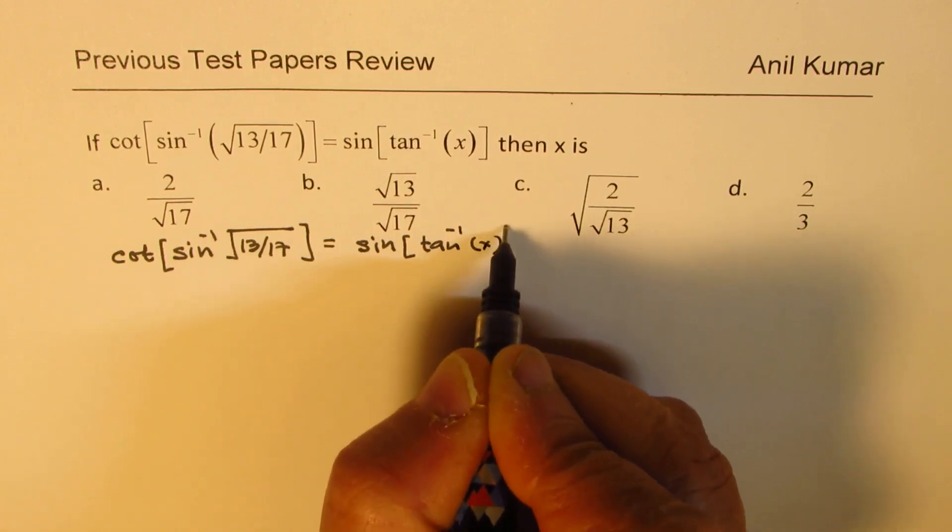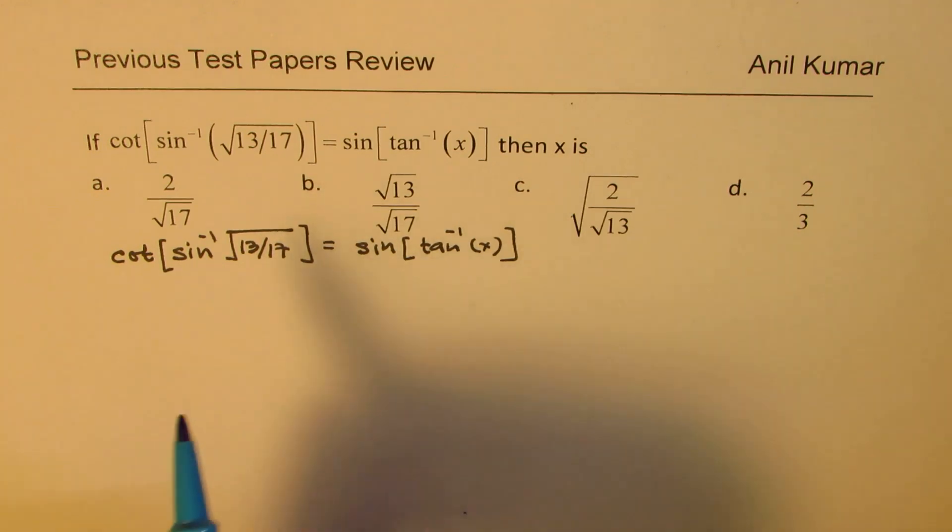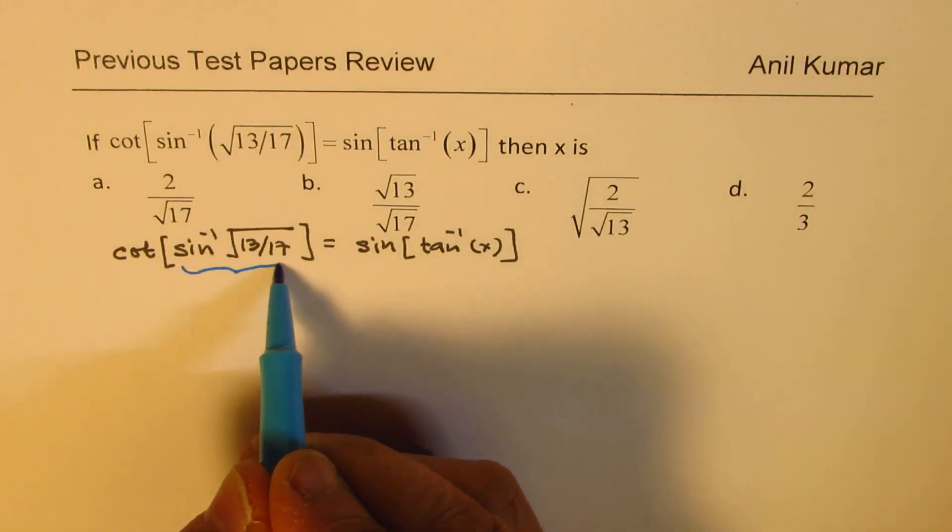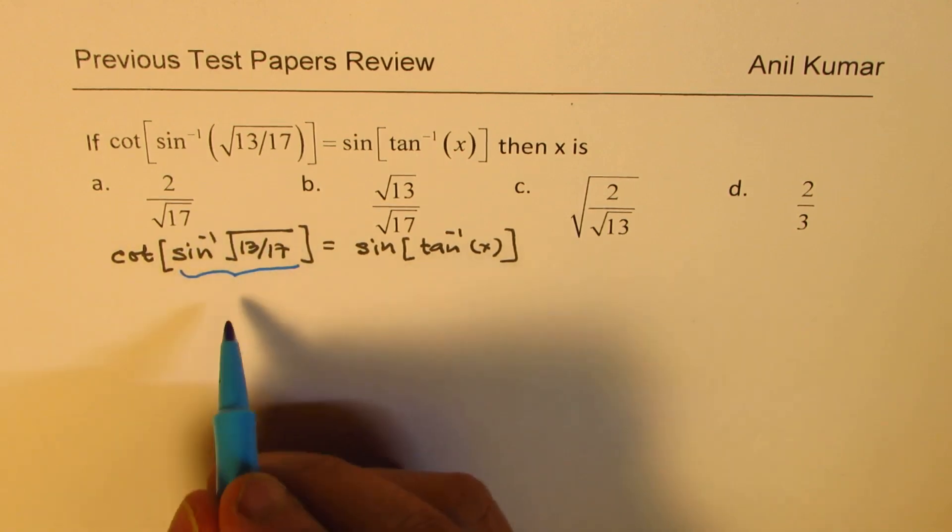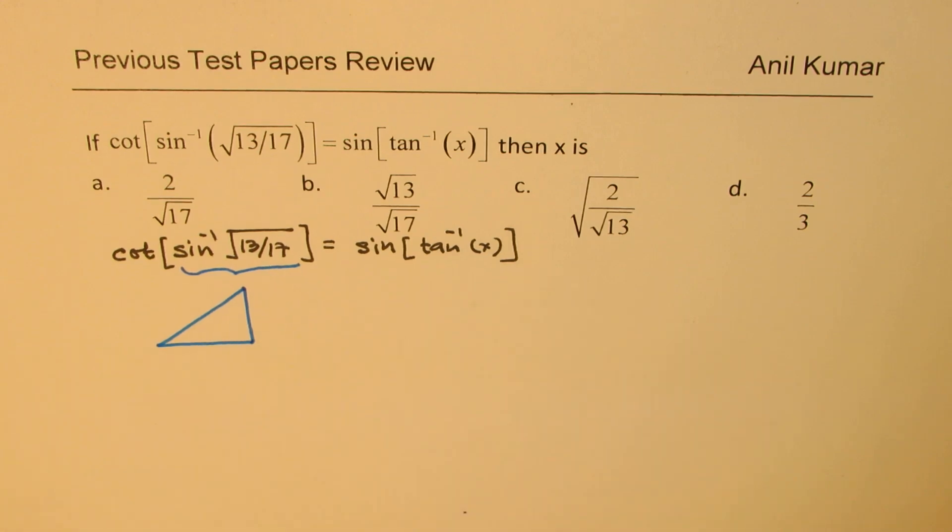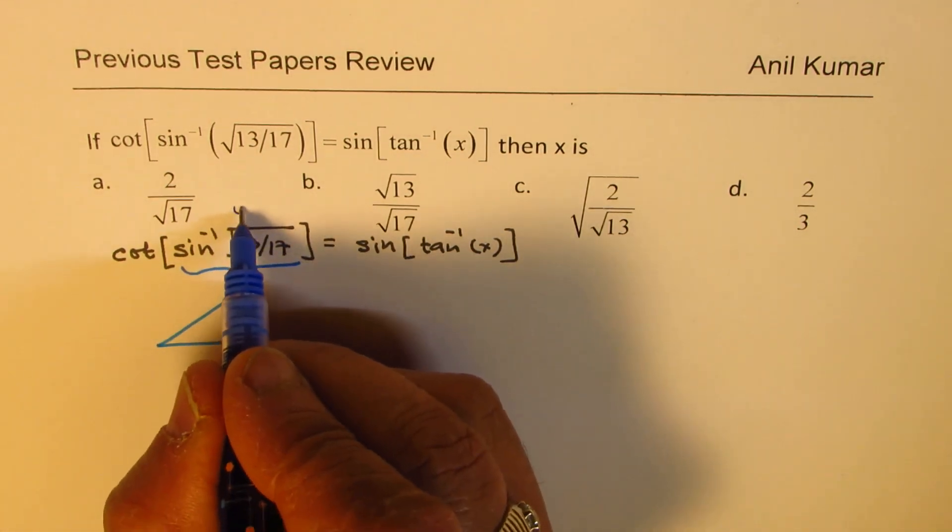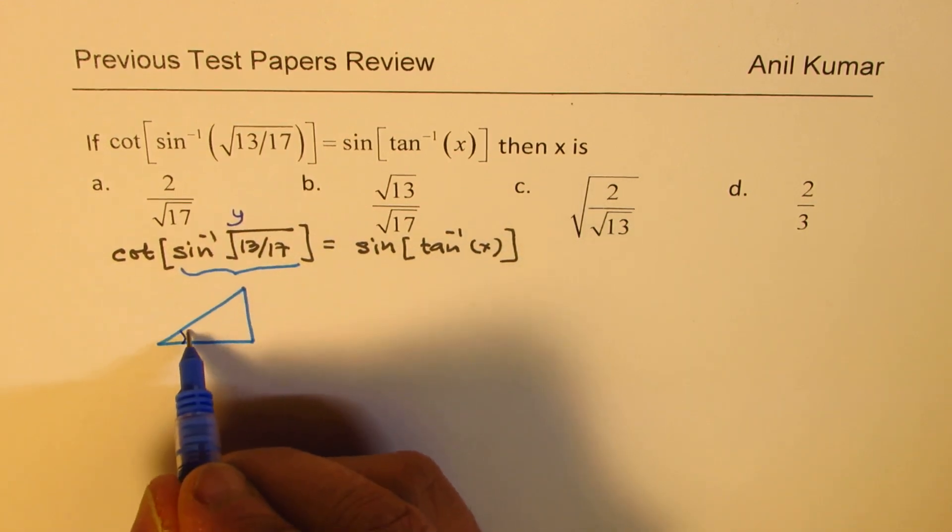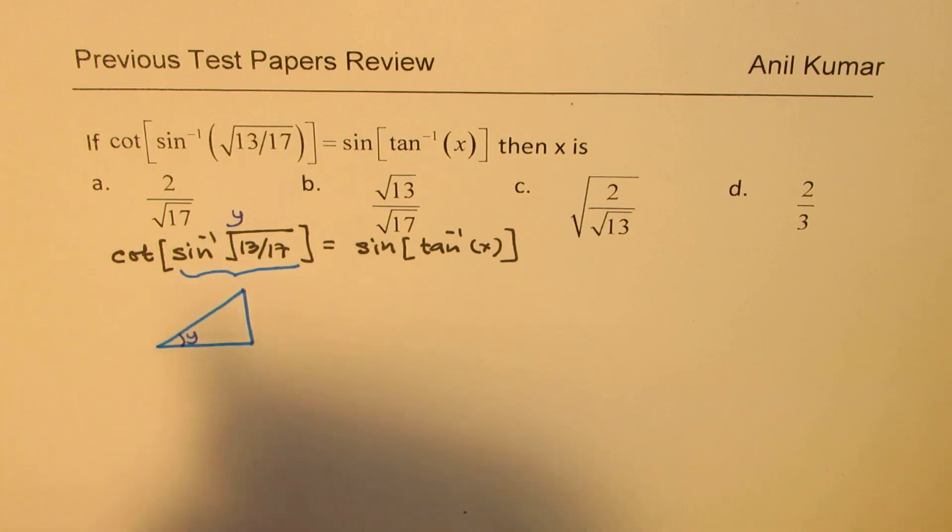The standard method which we should be following is using the expression in the bracket, we can form our triangle. This gives you a triangle whose sides are what? Sine, let's say this whole value is y. We can write this as y.